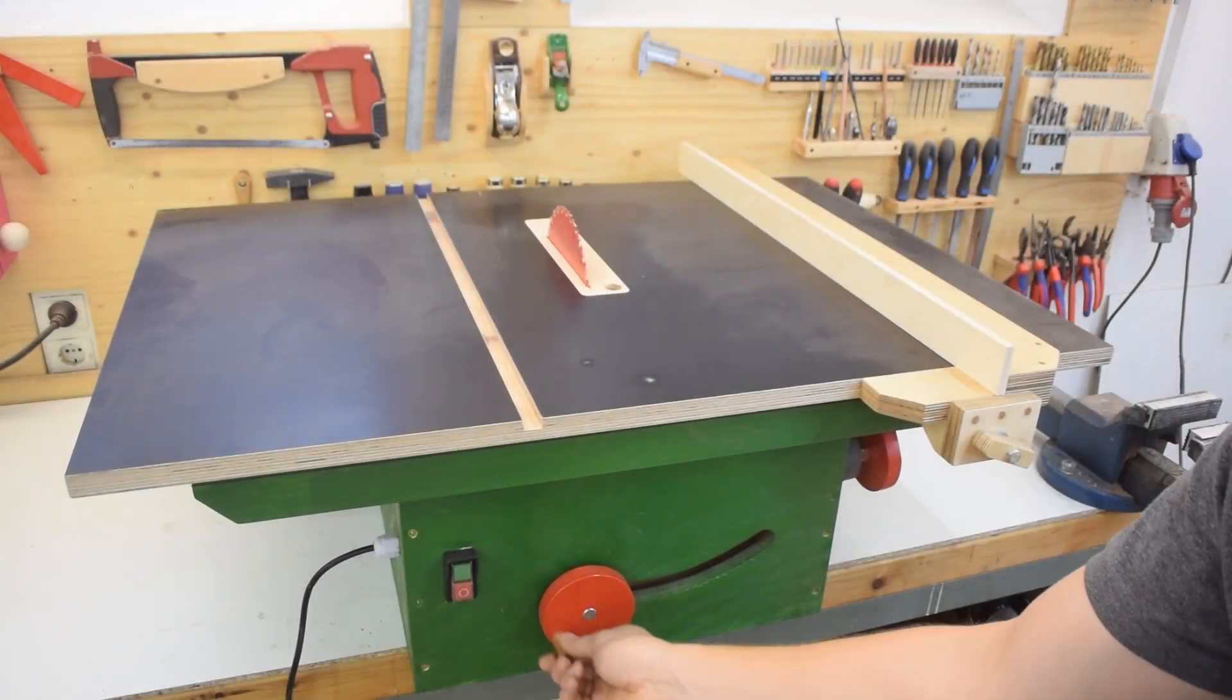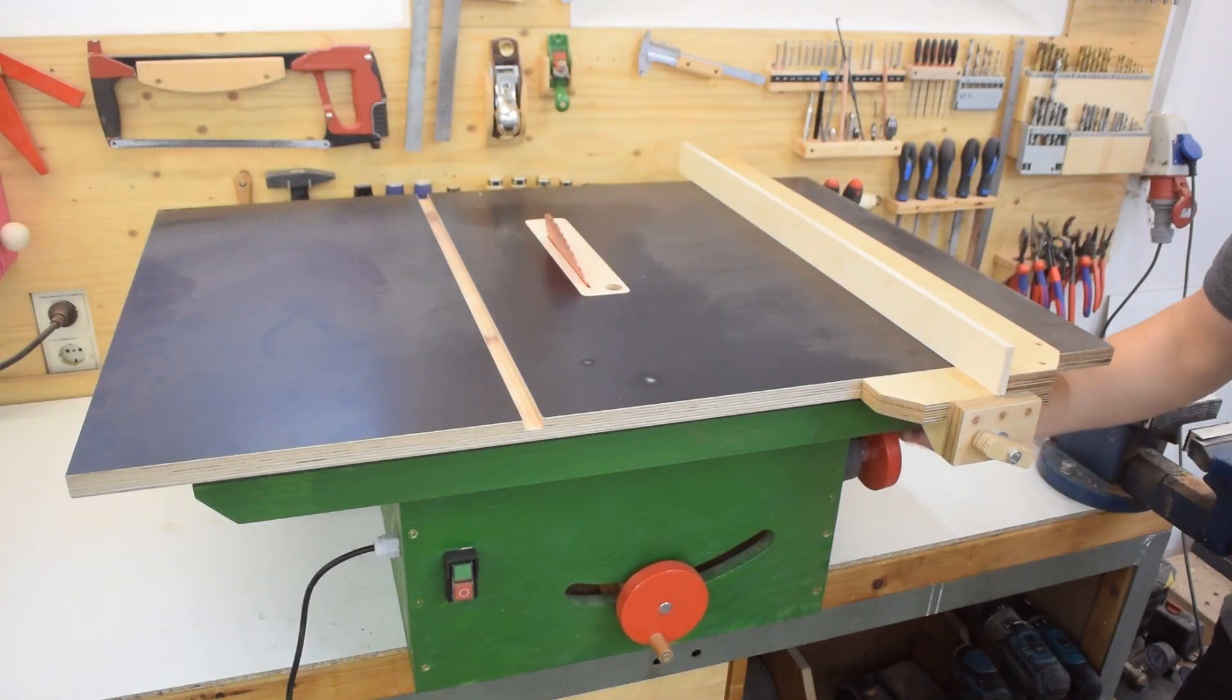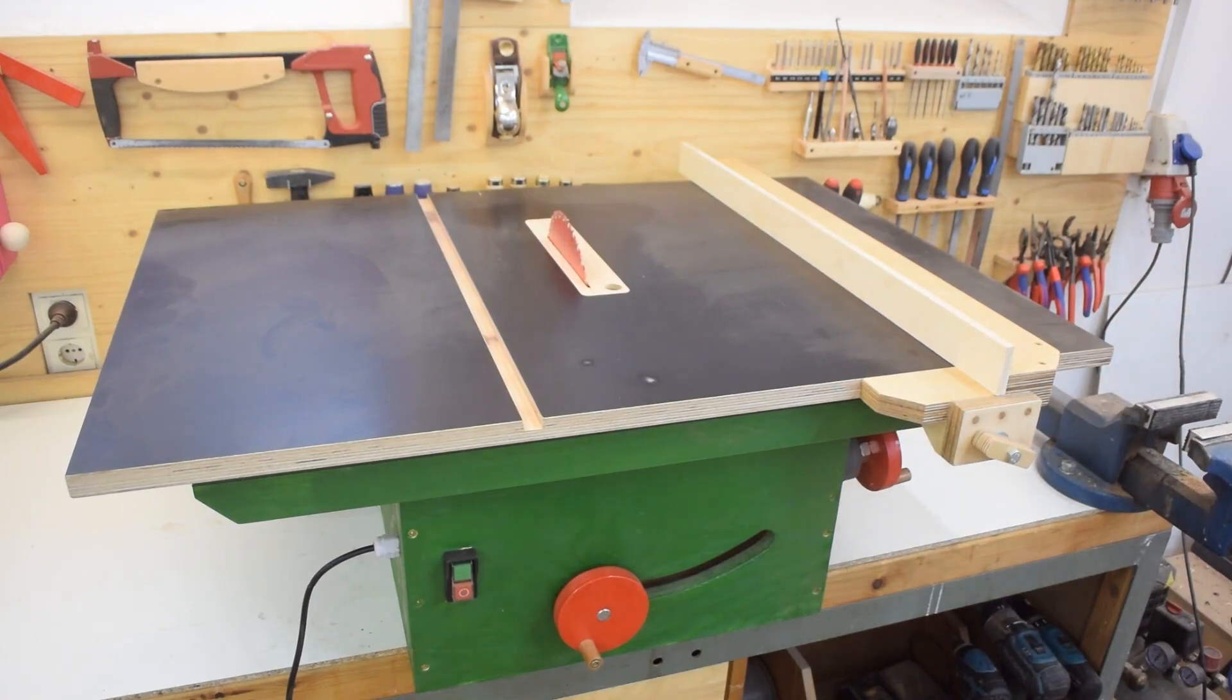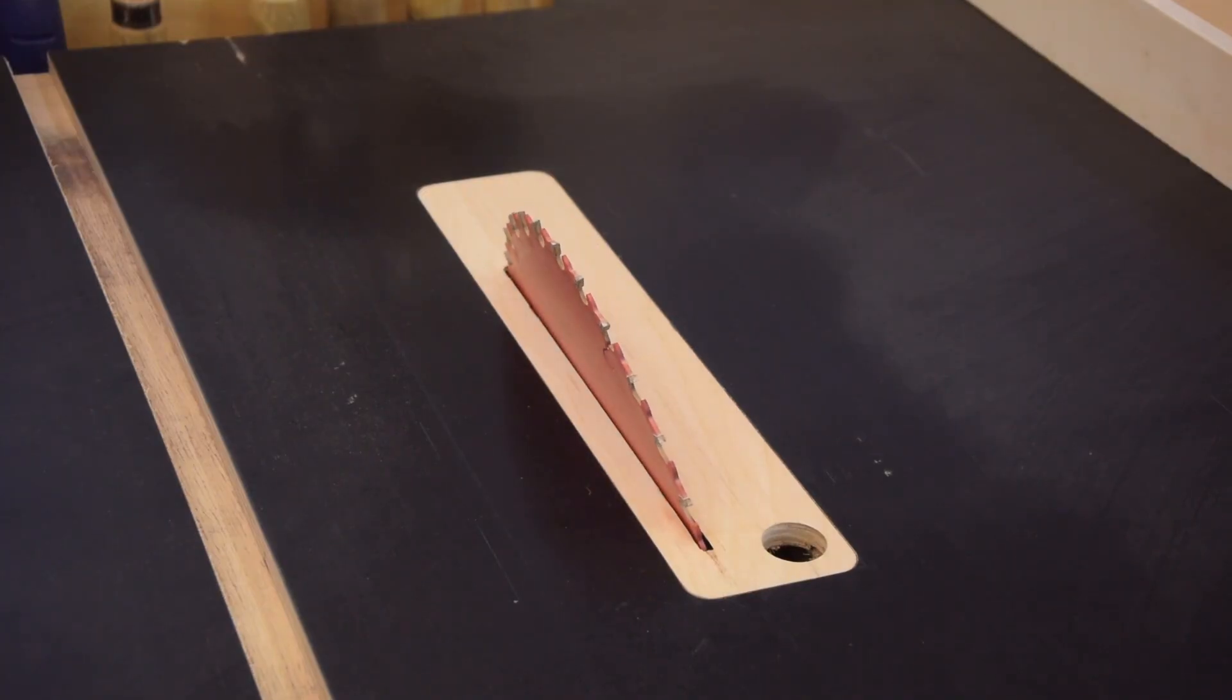Trunnions allow for the blade's tilting axis to be in one plane with the surface of the table, and that allows the blade to stay in position while being tilted. Which basically means that you can use one zero clearance insert for all angles, and if you have one you can still trust the scale on your fence system with the blade tilted.